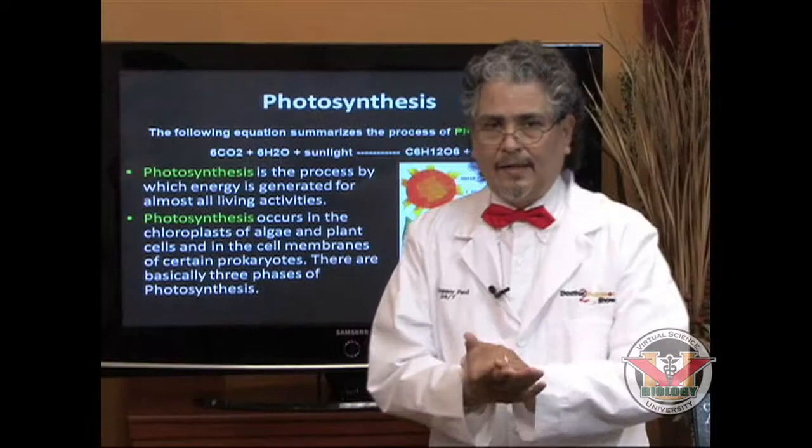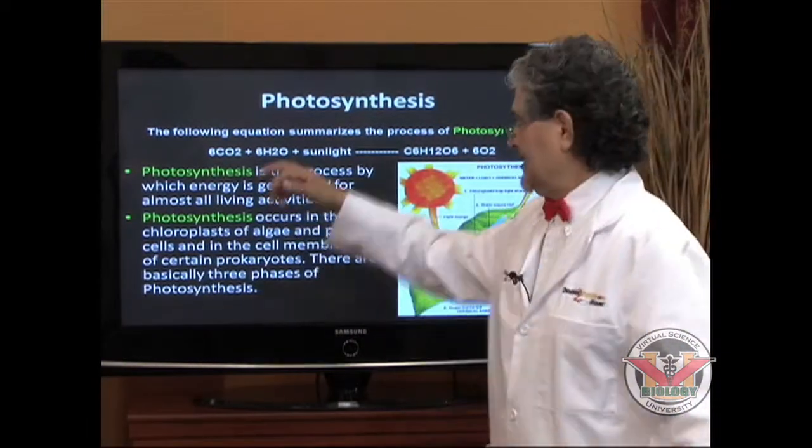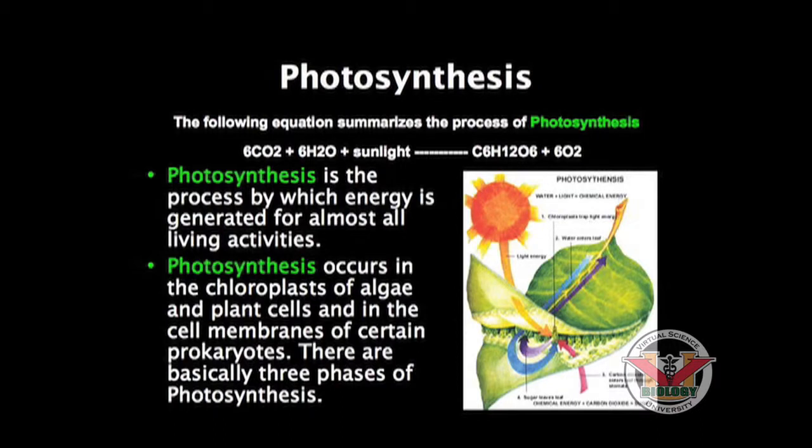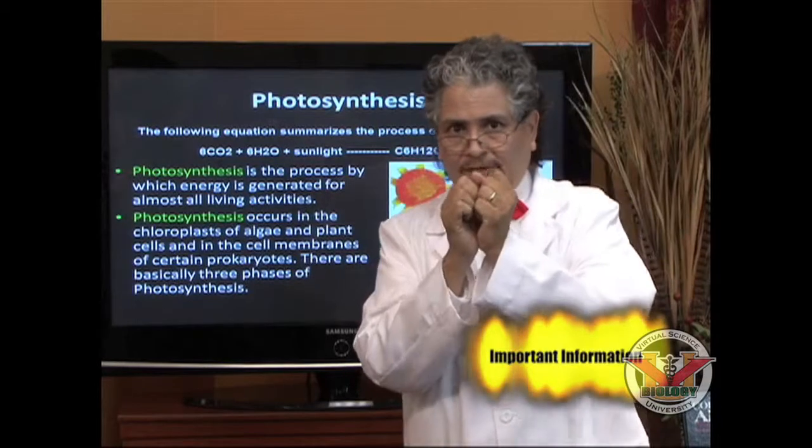The summary of photosynthesis is basically this: 6CO2, which is six molecules of carbon dioxide, plus 6H2O, which is six molecules of water, in combination with sunlight, gives you C6H12O6, which is glucose or sugar, plus six O2, which is six molecules of oxygen. That's critical for you to see.